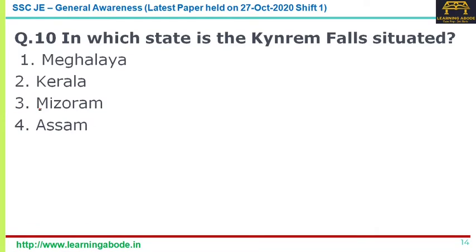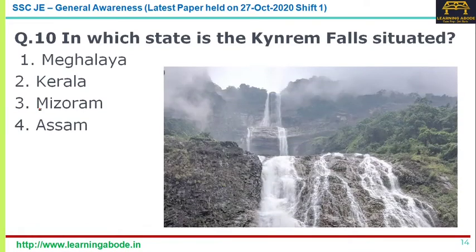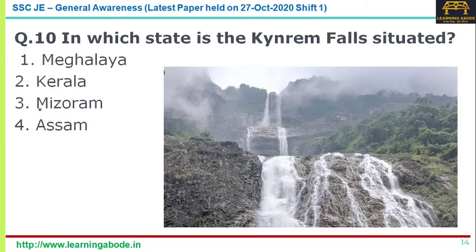Question number ten: in which state is the Kindram Falls situated? The Kindram Falls is located 12 kilometres from Cherrapunji in the East Khasi Hills district, situated in Thangarang Park. It is the seventh highest waterfall in India. The answer is option one — Meghalaya.